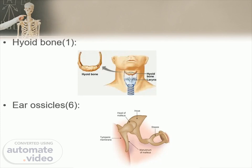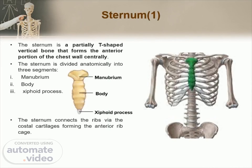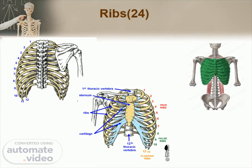The next part of the axial skeleton is the sternum — a partially T-shaped vertical bone that forms the anterior portion of the chest wall centrally. It is divided anatomically into three segments and connects the ribs via the costal cartilages, forming the anterior rib cage. The ribs form the main structure of the thoracic cage, protecting the thoracic organs, but their main function is to aid respiration. There are twelve pairs. The true ribs directly articulate with the sternum via costal cartilages — these are the first seven ribs. The false ribs indirectly articulate with the sternum, with their costal cartilages connecting to the seventh costal cartilage — they are the eighth, ninth, and tenth ribs.